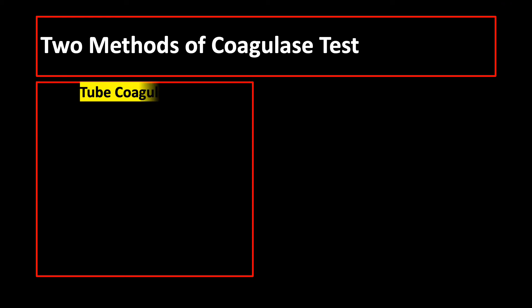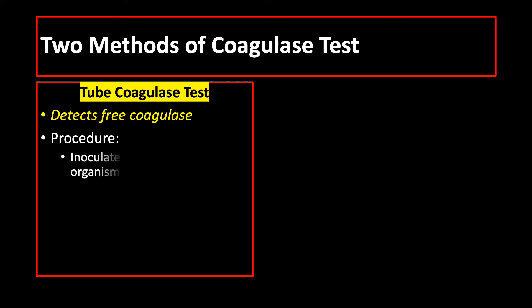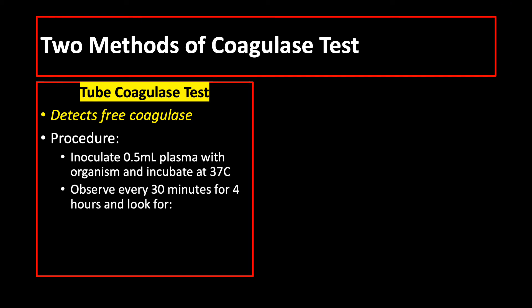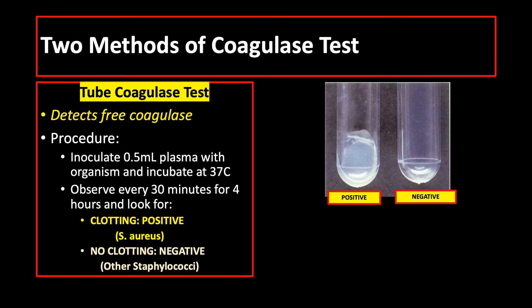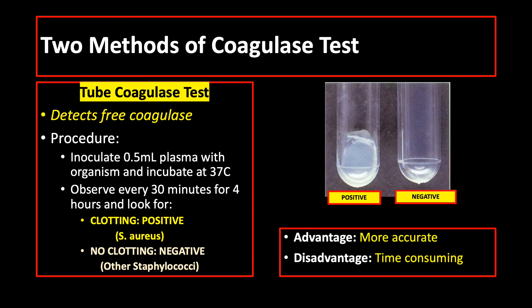The next method is the tube coagulase test, which detects free coagulase. You inoculate 0.5 ml of plasma, like rabbit plasma, with the organism and incubate at 37 degrees Celsius. Observe every 30 minutes for 4 hours, and look for clotting or coagulum as a positive tube coagulase test, like in the case of Staphylococcus aureus. Otherwise, it is a negative tube coagulase test, like in the case of Staphylococcus epidermidis and saprophyticus. Tube coagulase test is more accurate, but the problem is it is time-consuming.